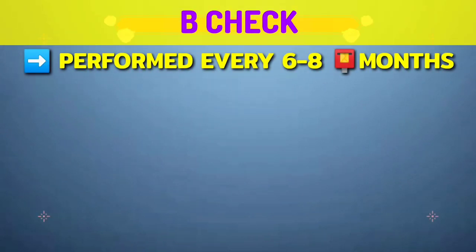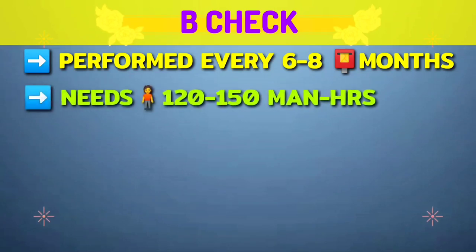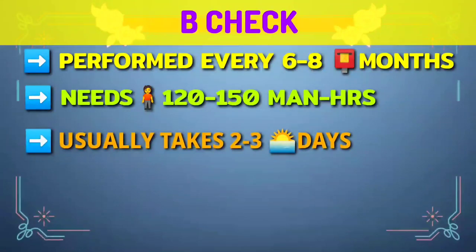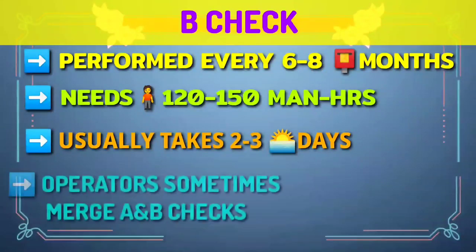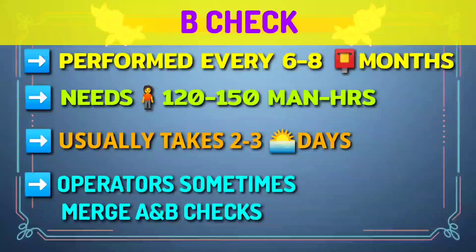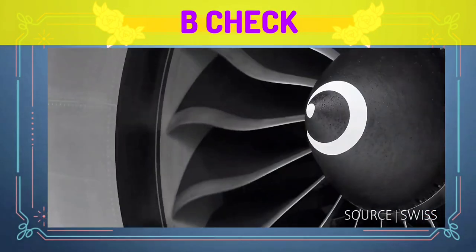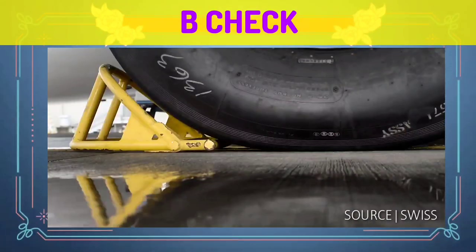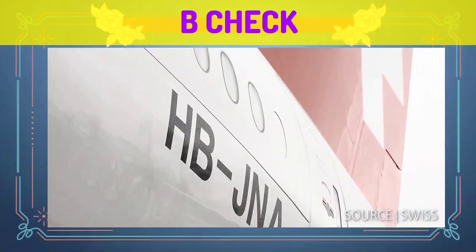B check is performed every 6 to 8 months and needs about 120 to 150 man-hours depending on aircraft, usually completed within 2 to 3 days at an airport hangar. Sometimes operators merge A and B checks. To ease the task they subdivide these checks as A1 to A8 or B1 to B4. B check is very similar to A check but is a more detailed inspection of components and systems, and includes all A check items.